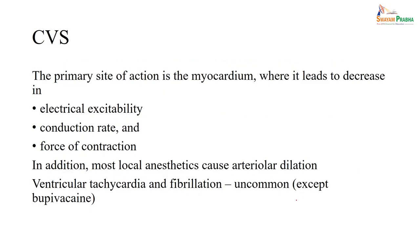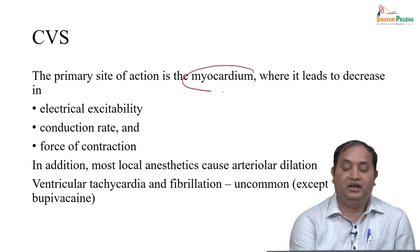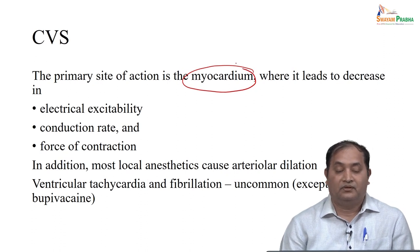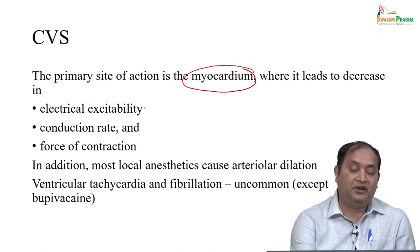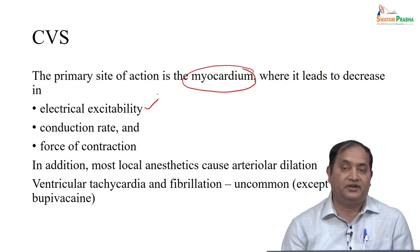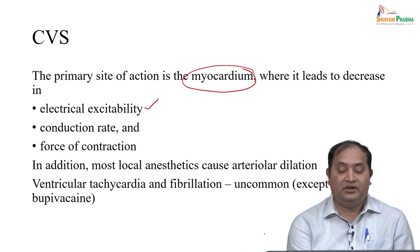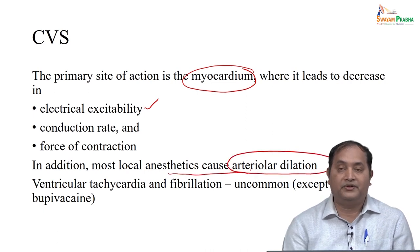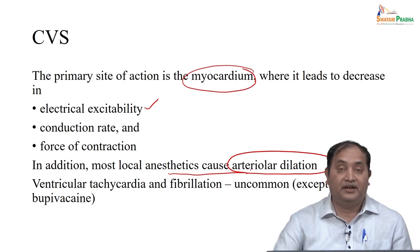Second, regarding the cardiovascular system, the primary site of local anesthetic action is the myocardium. We also use lignocaine in many cardiac conditions. The action on the myocardium — drugs like lignocaine interfere with electrical excitability and with conduction from SA node to AV node and contraction properties, thus interfering with the force of contraction. In overdose, it may cause arterial dilation, ventricular tachycardia, or fibrillation — though uncommon except with bupivacaine.